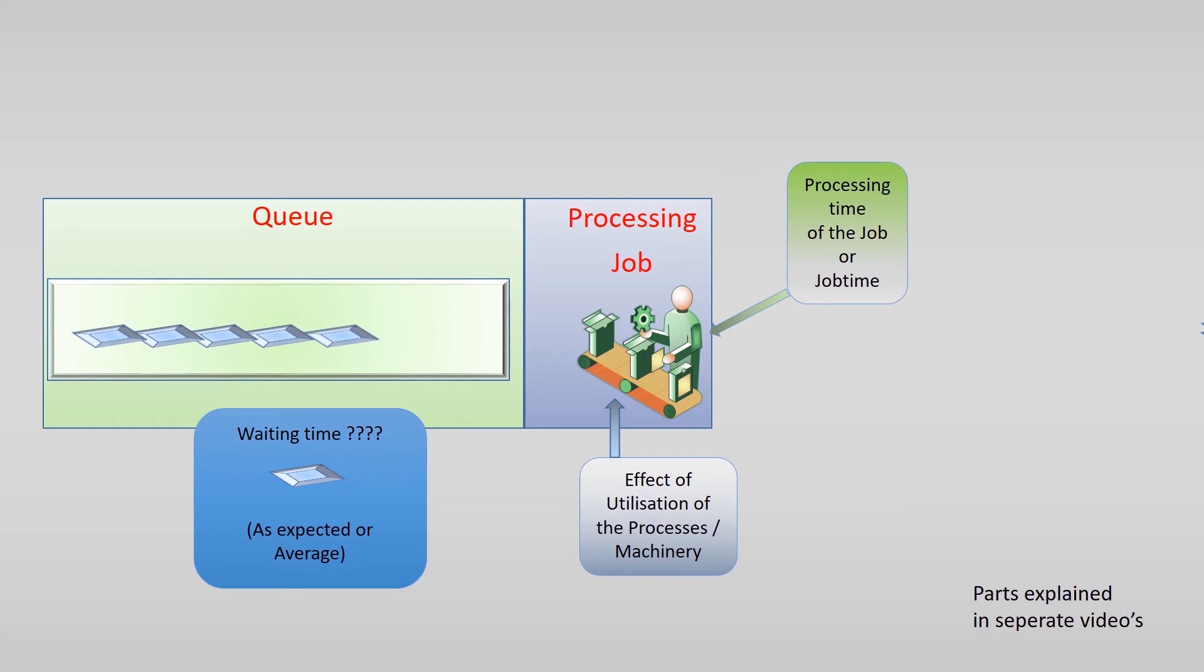But if the process has some slack in the time it is planned, then small hiccups and delays can be dealt with, so the expected waiting time does not have to rise or not so much. So the utilization of the process or machine has an effect on the waiting time too. How much this is, we will explain in the video about utilization.